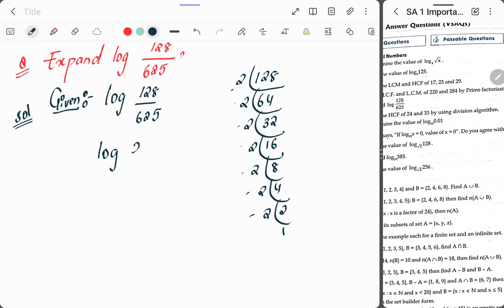So in place of 128, we write 2 to the power of 7, divided by 625. Now for 625: 5, 125, 5, 25, 5, 5, 5, 1. So in place of 625, 5 is repeating 4 times, so we write 5 to the power of 4.